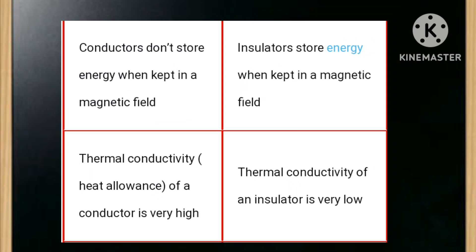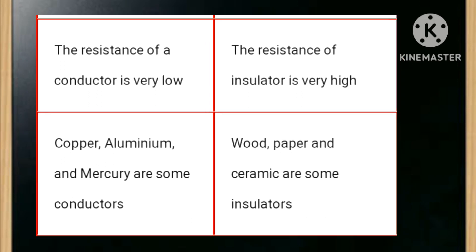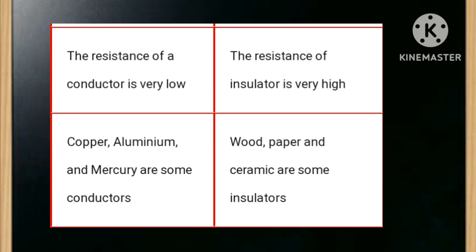Conductors don't store energy when kept in a magnetic field, whereas insulators store energy when kept in a magnetic field. Thermal conductivity of a conductor is very high, while thermal conductivity of an insulator is very low. The resistance of a conductor is very low, while the resistance of an insulator is very high. Copper, aluminium, and mercury are some conductors; wood, paper, and ceramic are some insulators.